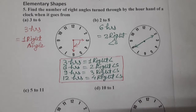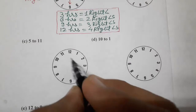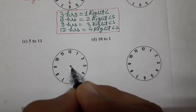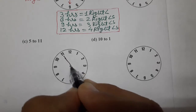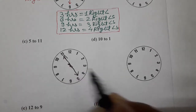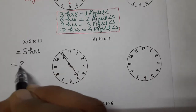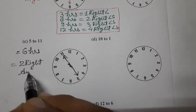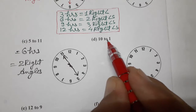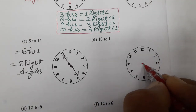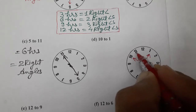Next, (c) 5 to 11. So count: 3, 4, 5, 6 — that is 6 R's. Where is 5? Mark 5. 5 is here. 11 is here. So 1, 2, 3, 4, 5, 6 — 6 R's, and 6 R's means we know 2 right angles.